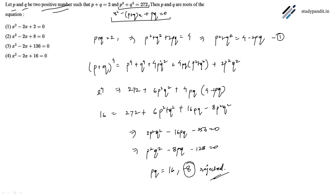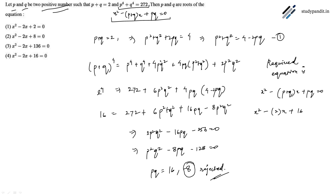So pq equals 16. The required equation is x squared minus (p plus q)x plus pq equals 0, which gives x squared minus 2x plus 16 equals 0. This is the required equation, corresponding to option 4.